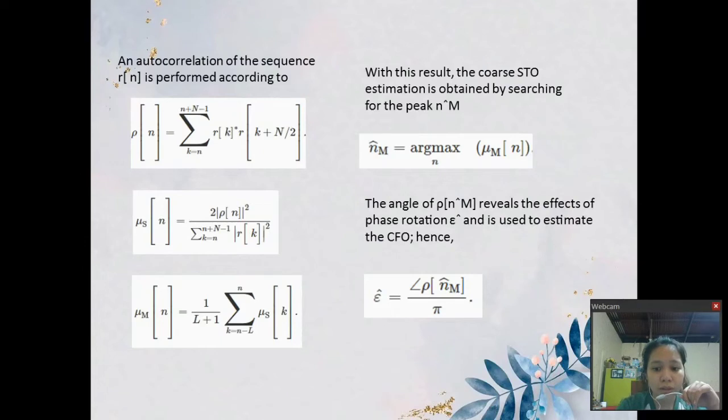From this normalized auto-correlation, the presence of the CP and CS creates a plateau effect in the metric. But this ambiguity can be resolved by integrating over the length of the CP and CS. With this result, the coarse STO estimation is obtained by searching for the peak Nm.